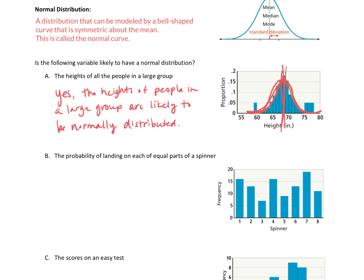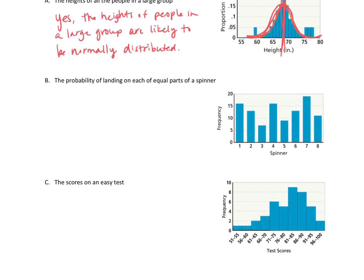So what that means is your average height, most of the people are going to be pretty close to that average height. You're going to have fewer people extremely taller than that. That's why the curve goes down. And you're going to have fewer people extremely shorter than the average height. But if you have a large group of people, in general, most people are going to be pretty close to your average height. So it would take the shape of a bell curve. It is likely to be normally distributed.